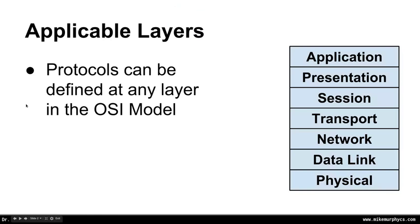Network protocols can be defined at any layer in the OSI model. So we can have a protocol defined as an application layer protocol, as a presentation or session layer protocol — even though in practice we don't use those — we can have a transport layer protocol, a network layer protocol, a data link layer protocol, or a physical layer protocol.